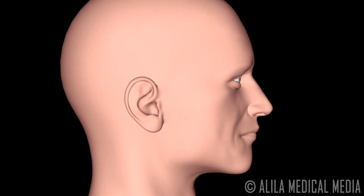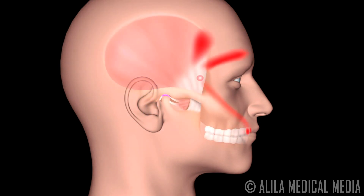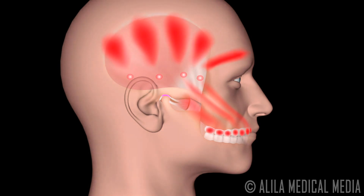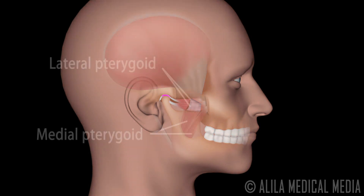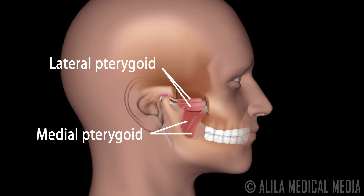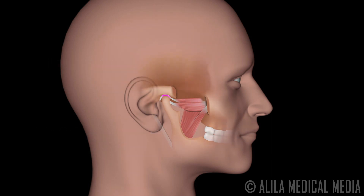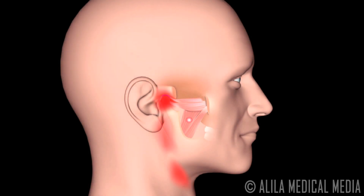Trigger points in the temporalis are also associated with headache and toothache from upper teeth. The main culprits of myofascial pain in the TMJ area are the pterygoid muscles. Trigger points in the medial pterygoid refer pain to the TMJ region in front of the ear, inside the mouth.